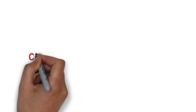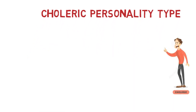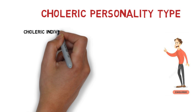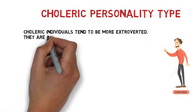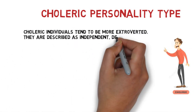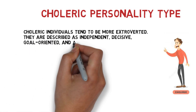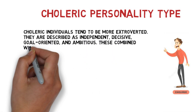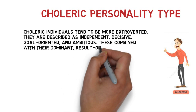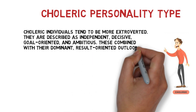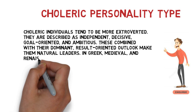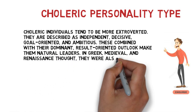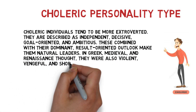Choleric personality type. Choleric individuals tend to be more extroverted. They are described as independent, decisive, goal-oriented, and ambitious. These, combined with their dominant result-oriented outlook, make them natural leaders. In Greek, medieval, and Renaissance thought, they were also considered violent, vengeful, and short-tempered.